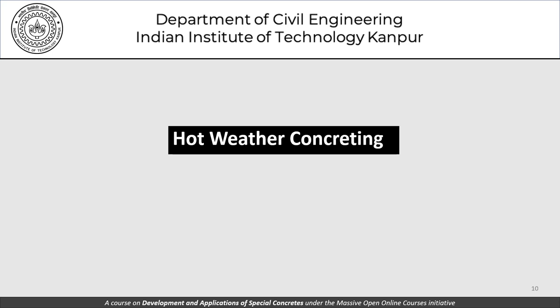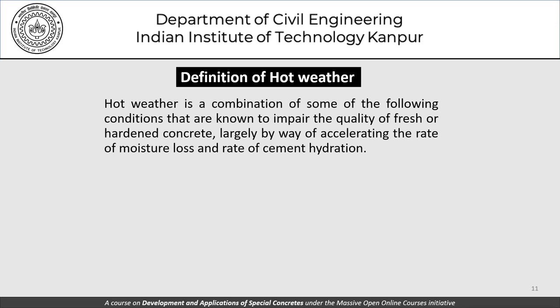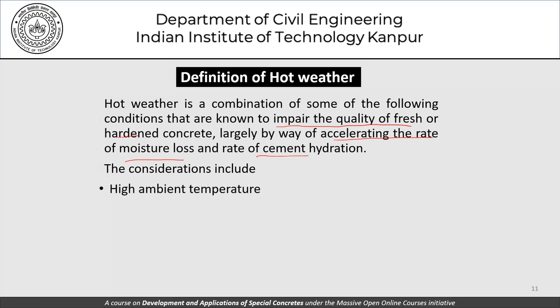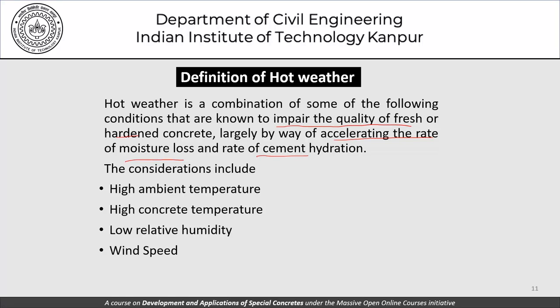Hot weather is a combination of conditions that impair the quality of fresh or hardened concrete, largely by accelerating the rate of moisture loss and the rate of hydration of cement. These conditions include high ambient temperature, high concrete temperature, low relative humidity, or high wind speeds. A combination of any of these is likely to lead to hot weather concreting concerns — increased rate of moisture loss from the concrete surface and increased rate of hydration.